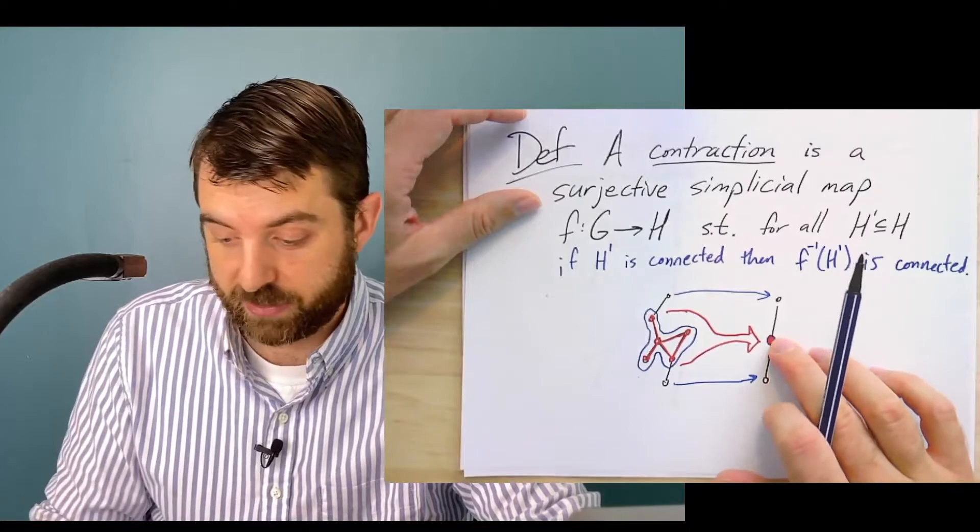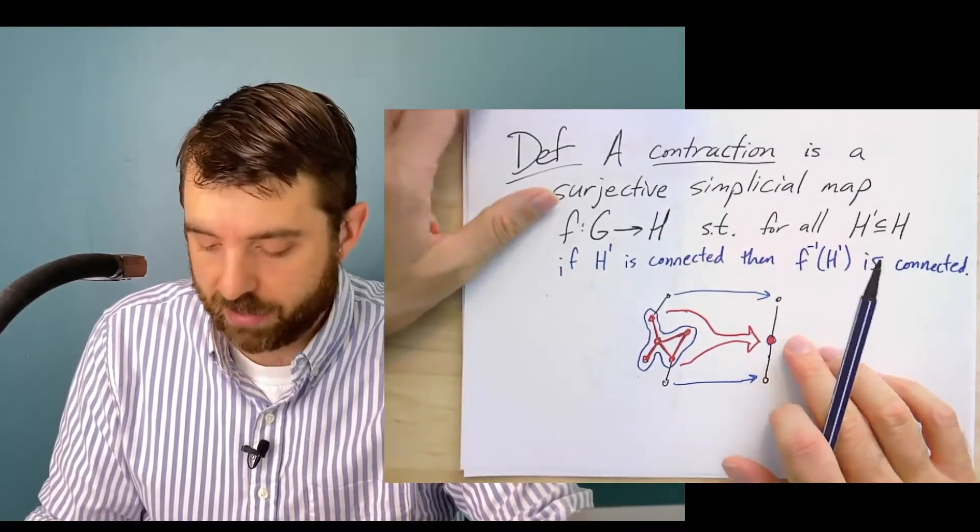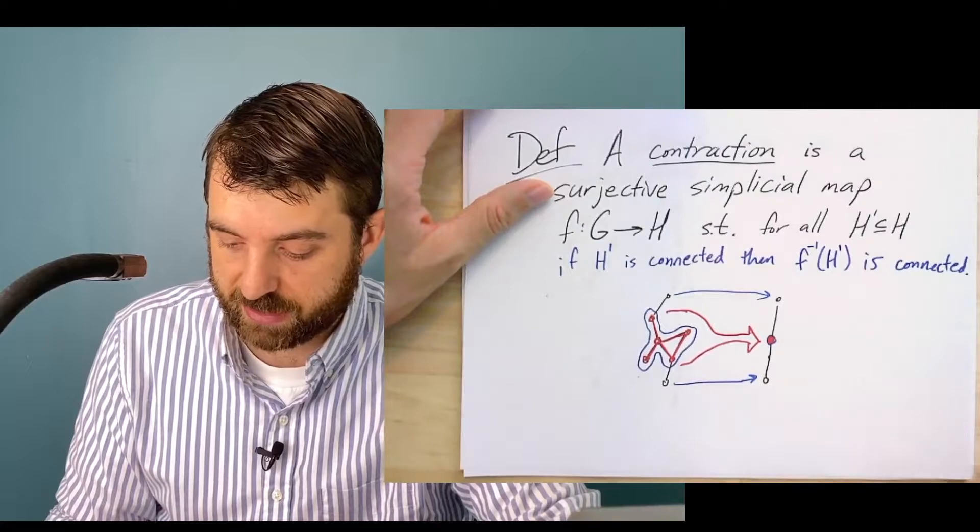Now, the single vertex is a connected graph. And so its preimage, in this case, is connected.